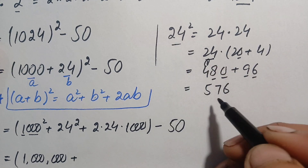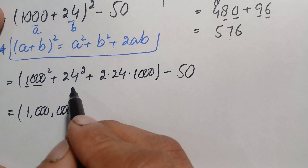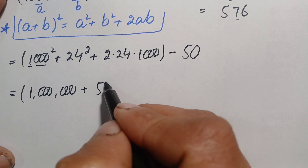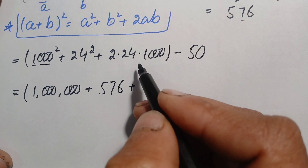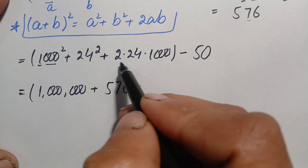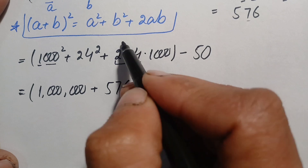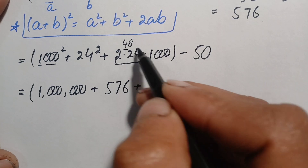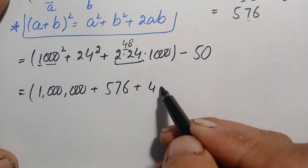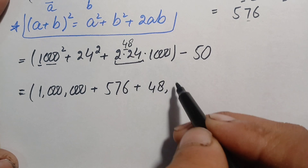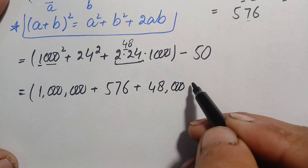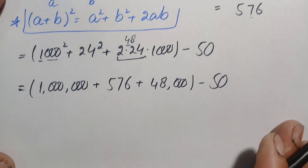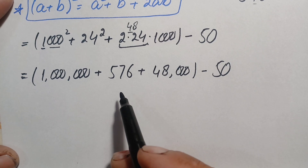Replacing 24 squared with 576, we now compute 2 times 24 times 1000. First, 2 times 24 is 48. Then 48 times 1000: 48 times 1 is 48, and multiplying by 1000 appends three zeros, giving 48,000. So our expression is now 1,000,000 plus 576 plus 48,000 minus 50.